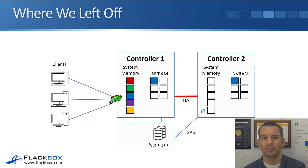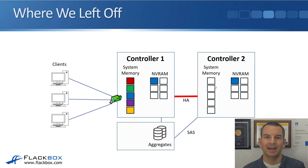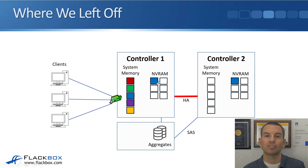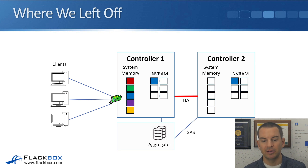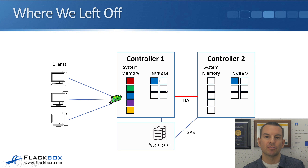We're able to do that because of the system memory and the NVRAM in the controllers. But there's only so much system memory and NVRAM. When NVRAM is half full, it's time to write the data to disk — that happens in a consistency point. The data that hasn't been written to disk yet gets written down with a consistency point, and then we flush or empty NVRAM and start again.